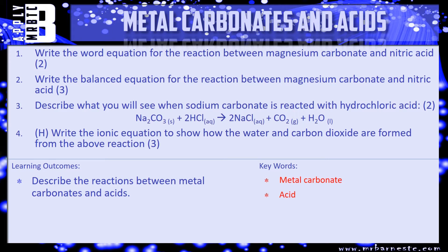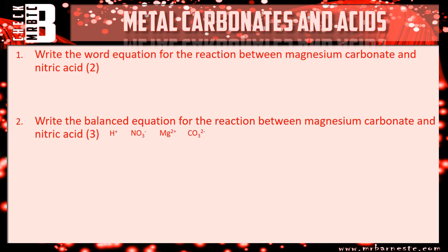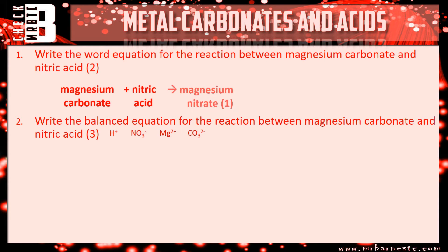Let's see how you've done. Question one: write the word equation for the reaction between magnesium carbonate and nitric acid. Your reactants are magnesium carbonate and nitric acid. Your first mark is for the salt formed — take the metal name, magnesium, and since nitric acid gives a nitrate, you get magnesium nitrate. Your second mark is for the byproducts — because you have a carbonate, you add carbon dioxide and water.